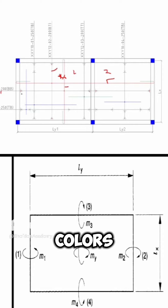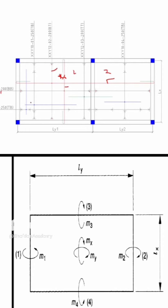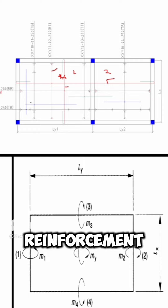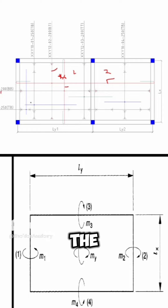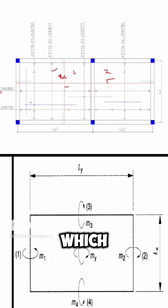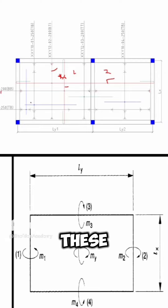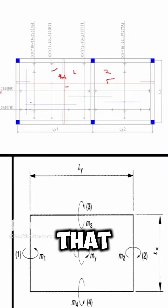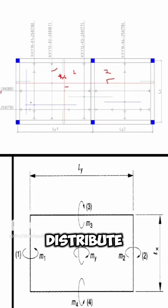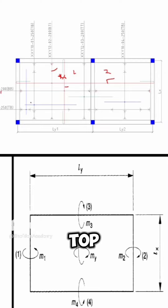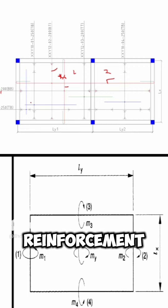The ones in blue colors are the distribution reinforcement. The position of the distribution reinforcement is T2, which is also known as near-top reinforcement. These are the reinforcement that we use to distribute the top reinforcement.